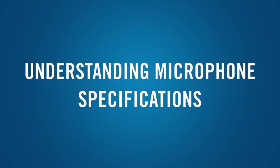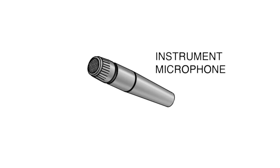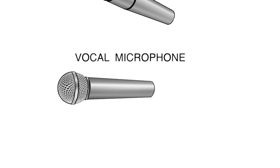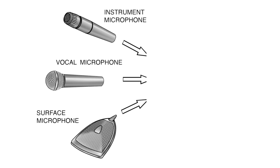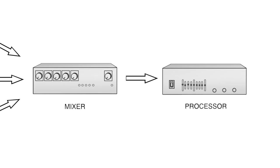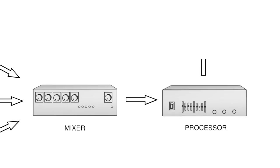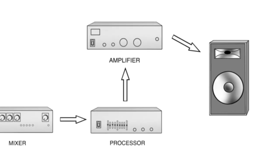A microphone's primary purpose is to convert acoustic energy, sound, into electrical energy — a signal that can be amplified, recorded, or transmitted. Because the microphone is the first link in the audio chain, it's important to choose the right microphone for the job.